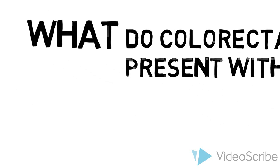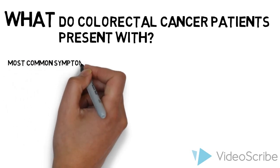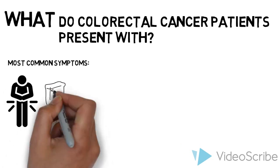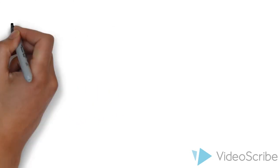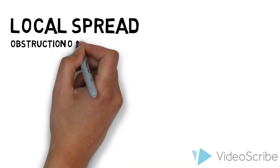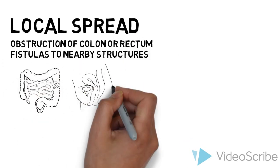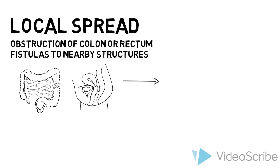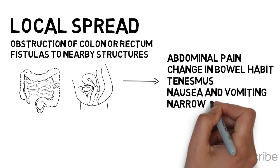What do colorectal cancer patients present with? The most common symptoms are abdominal pain, change in bowel habit, and blood in the stool. The signs and symptoms mirror the three ways that colorectal cancer spreads. Local extension can cause obstruction of the colon or rectum or result in fistulas with nearby structures, for instance the vagina. Obstructions and peritoneal spread can cause abdominal pain, change in bowel habit, tenesmus, nausea and vomiting, and narrow stools.